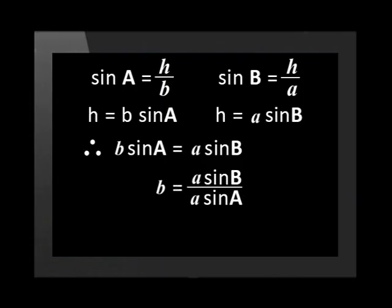If we rearrange this equation, we will get the more attractive looking sine rule. Let me show you how. b equals a times sine B over sine A. And then b over sine B equals a over sine A. This is how we prove the sine rule. We're not often asked to do it, but it's important to know how it works.